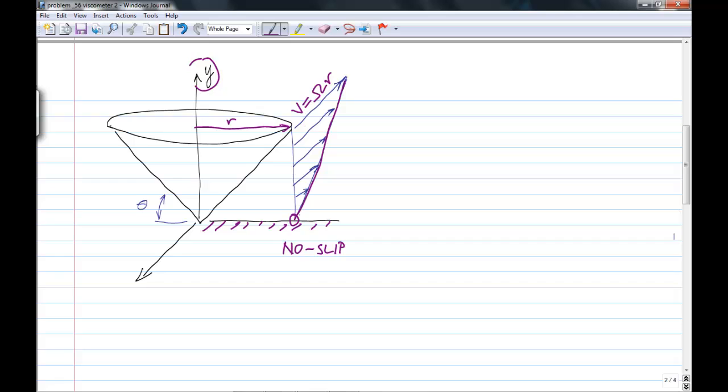At radius r, we have height above the solid surface H. This height varies, of course, as you move out along the cone. But we can calculate the velocity gradient now. du/dy, the vertical change in the velocity, that's just equal to v over h, which is equal to omega r over h.